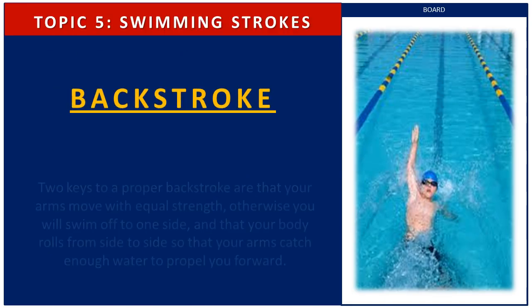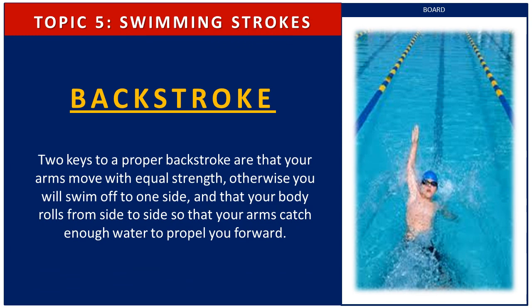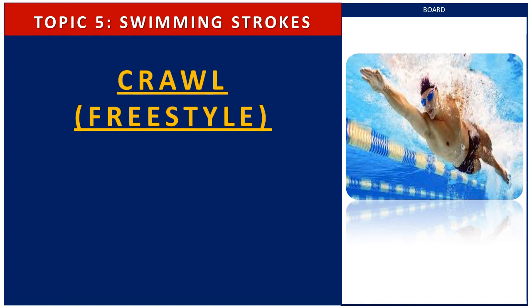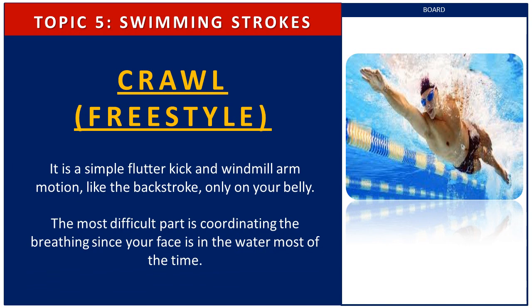Next is backstroke. Two keys to a proper backstroke are that your arms move with equal strength — otherwise you will swim off to one side — and that your body rolls from side to side so that your arms catch enough water to propel you forward. The last stroke is the crawl, or freestyle. It uses a simple flutter kick and windmill arm motion, like the backstroke only on your belly. The most difficult part is coordinating the breathing since your face is in the water most of the time.